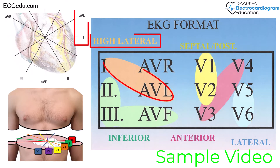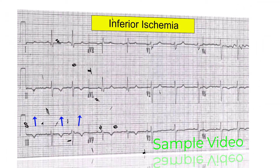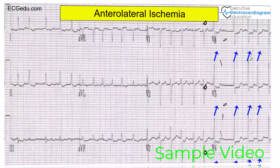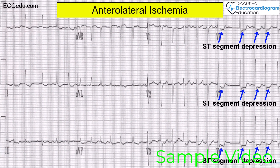Leads 1 and AVL represent the high lateral wall. This ECG has symmetrical isolated T-wave inversion in the inferior leads 2, 3, and AVF — this is inferior ischemia. Lastly, this ECG shows ST-segment depression in the anterior and lateral leads V3, V4, V5, V6. We will call this anterolateral ischemia.